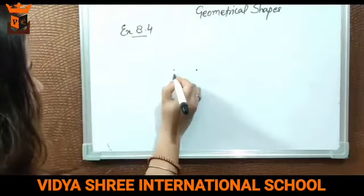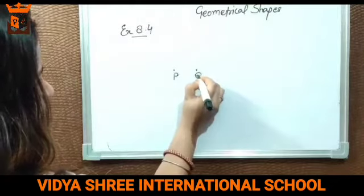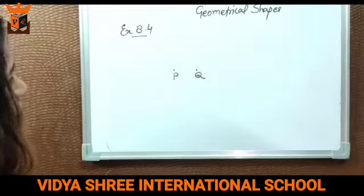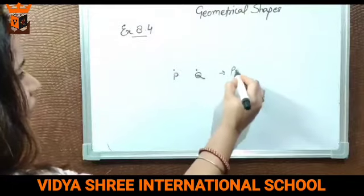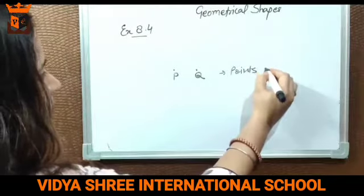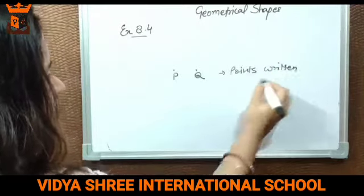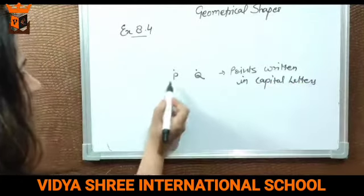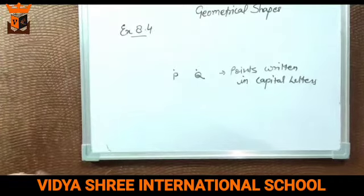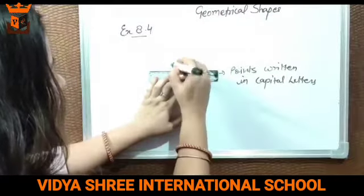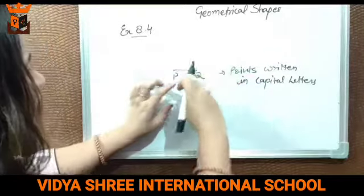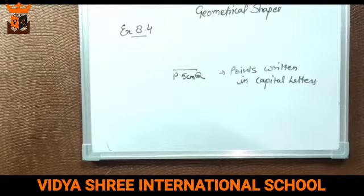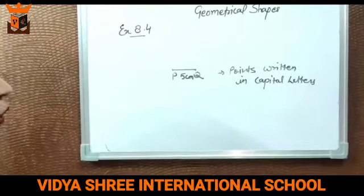Now, take off your scale. Then give names to the points — P and Q. Always remember that points should be given capital letters only. Points ko aap hamesha capital letters mein hi likhoge. Always. So we give capital letters P and Q to both the points. Now we join them. Since I already measured five centimetres, I don't need to measure it again. So this is our required line segment.